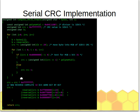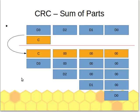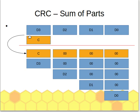Now let's look at the other idea of how CRC can be seen as sum of parts. In the previous slide we were computing byte-wise, but now let's say we are computing four 32-bit words at a time, which is 128 bits. So D3 is 32 bits, D2 is 32 bits, D1 is 32 bits, and D0 is 32 bits — overall a 128-bit word — and CRC itself is a 32-bit word.